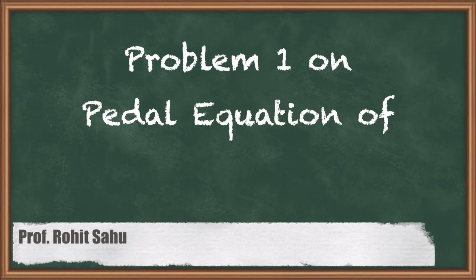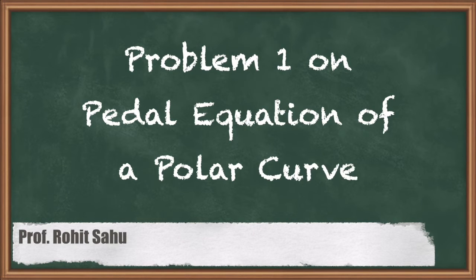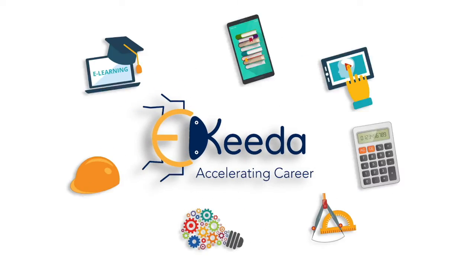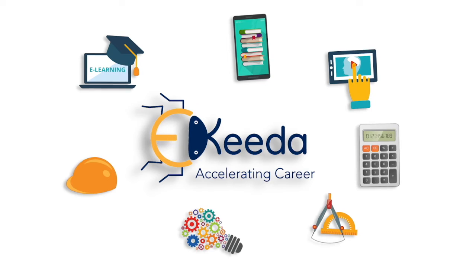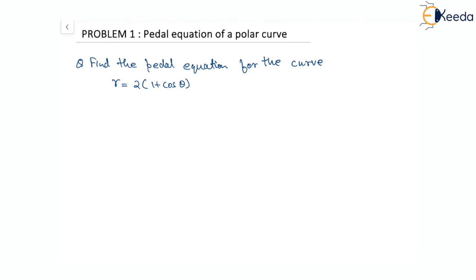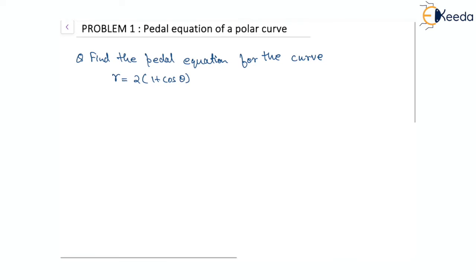Hello everyone. In this session we'll discuss one problem on the pedal equation of a polar curve. The equation is r equal to two times of one plus cos theta, for which we have to find the pedal equation. Starting with the given equation, r equal to two times of one plus cos theta.